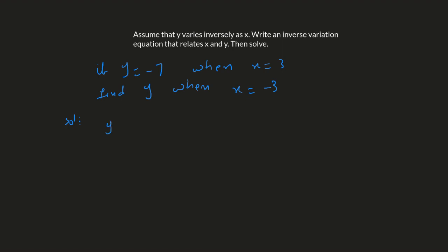Same steps: y varies inversely as x, so set up the equation y equals k over x. Plug in the first two values: y is negative 7 and x is 3, to figure out the value of k. Multiply 3 on both sides, so k equals 3 times negative 7, which is negative 21.